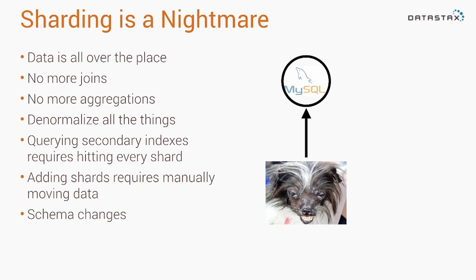As we continue to scale, the next thing we have to do is implement sharding — splitting data across multiple databases instead of having one master. This works for a little while, but the big problems are that your data is all over the place. If you were relying on a single master for OLAP queries, you can't do it anymore. All your joins, aggregations — all that is history. You have to keep building denormalized views of the data to answer queries efficiently.